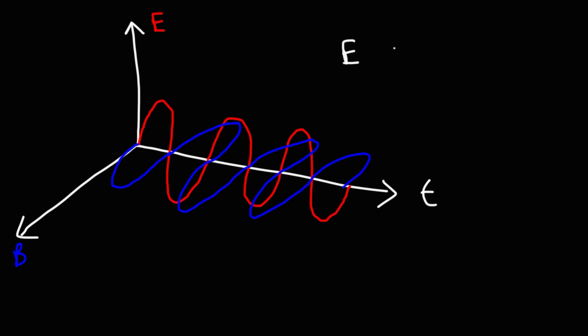The electric field is equal to the speed of light times the strength of the magnetic field. Electromagnetic waves can be created by any type of charged particle. A charged particle always has an electric field around it. A moving charged particle can create a magnetic field. But an accelerating charged particle can create a propagating electromagnetic wave.